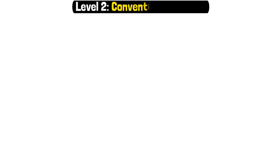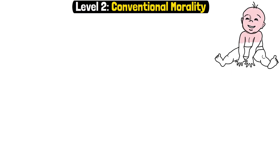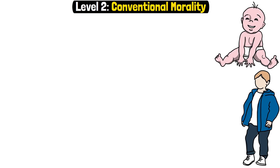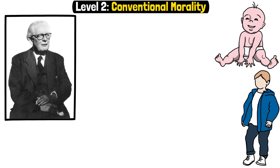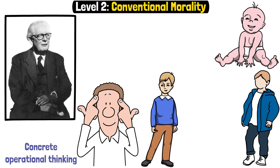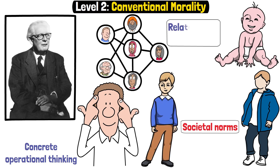Level 2 – Conventional Morality. This stage emerges in late childhood or early adolescence, aligning with Piazza's concrete operational thinking. Children begin internalizing societal norms and view morality in terms of relationships and social order.